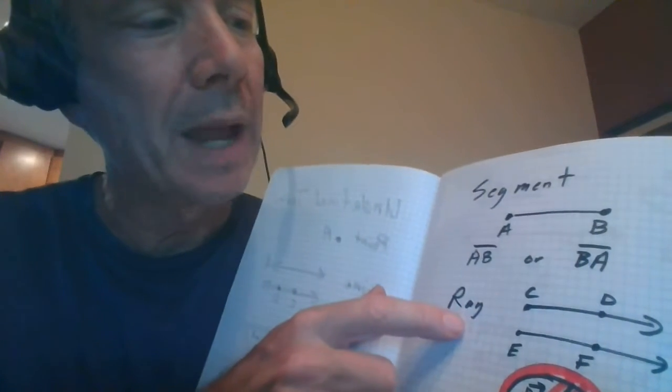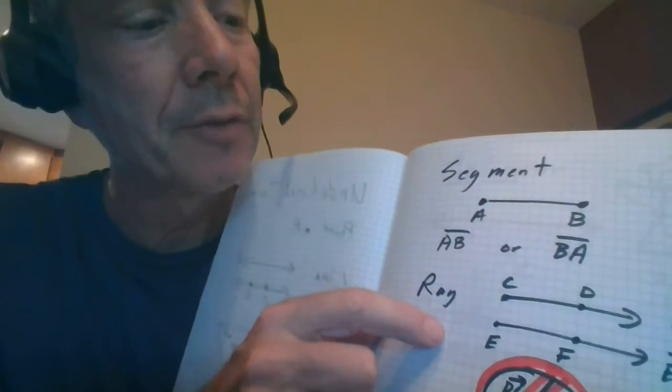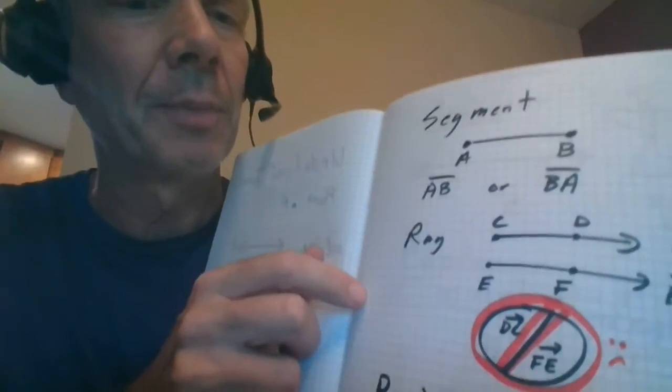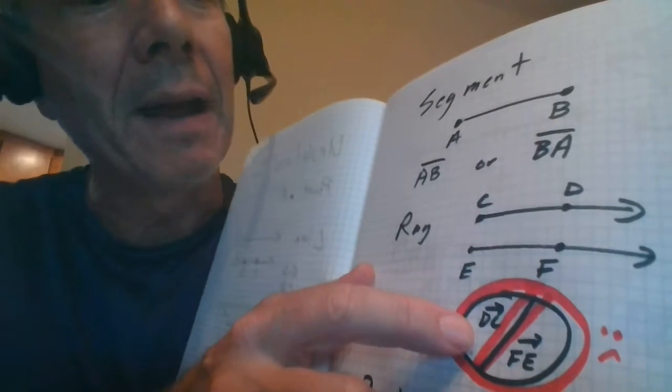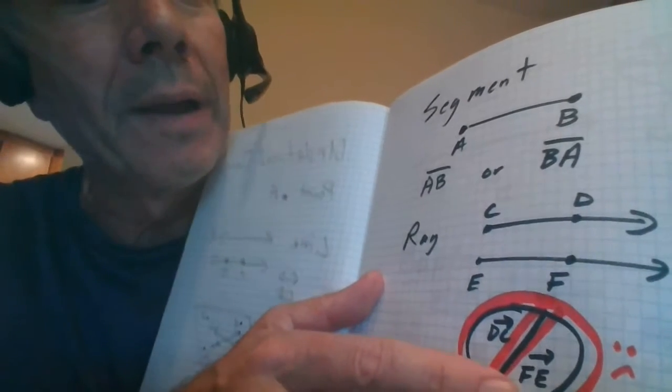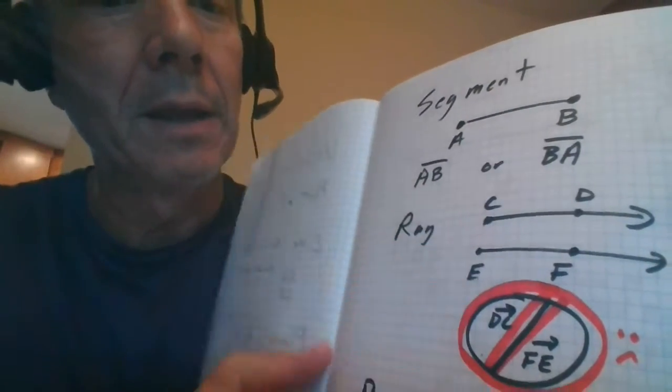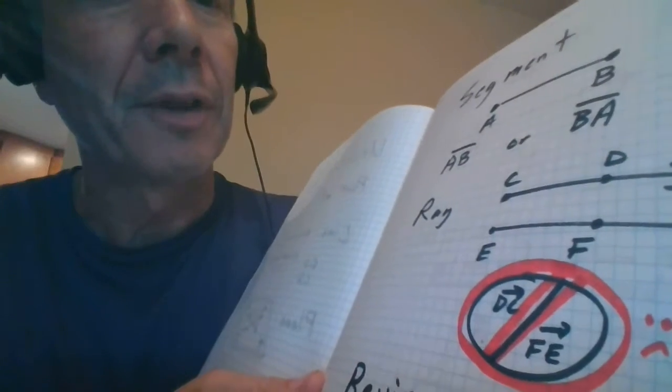And there's also a ray. Ray has an endpoint, but then goes through another point on forever. So this one can be called CD or EF. It's not necessarily alphabetical, that's just my example. What it cannot be, this is one of the few exceptions. This cannot be DC or FE, because that's not where it starts. It starts at C, goes through D, starts at E, goes through F. So that is the one place you can definitely make a mistake.